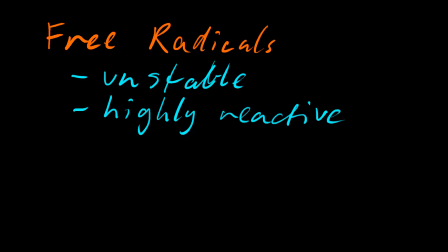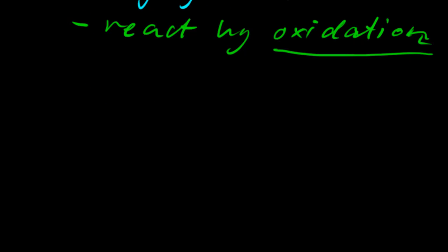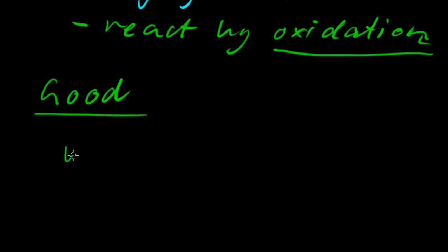An important thing to know here also is that they react by oxidation. So, there are some good things and some bad things that free radicals can do. Some good — white blood cells, types of white blood cells, have free radicals which help destroy pathogens by removing electrons from, for example, the pathogen cell membrane or something like that. And so, that helps us fight against disease.